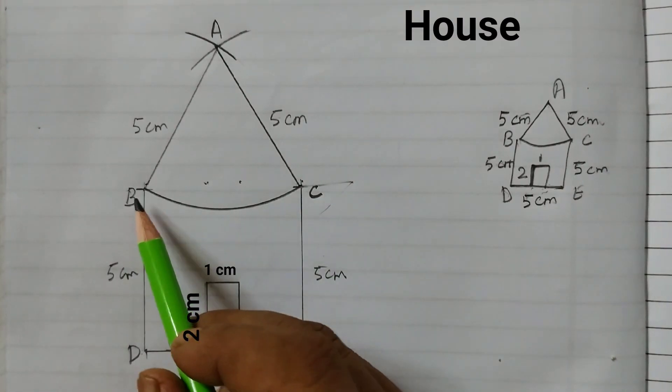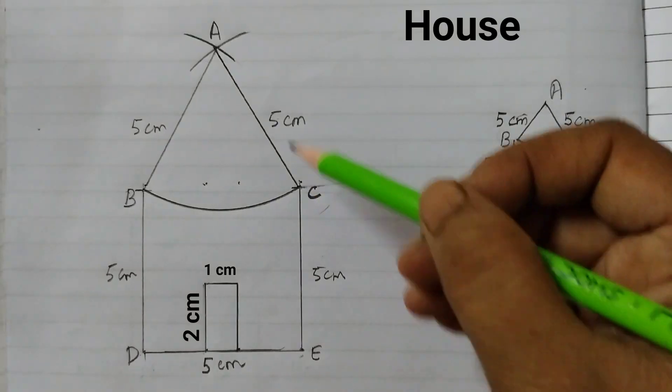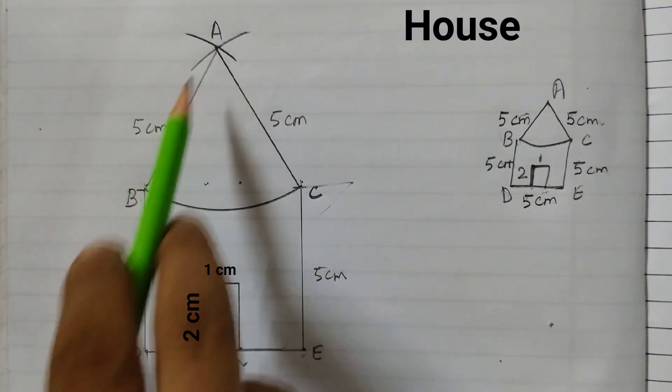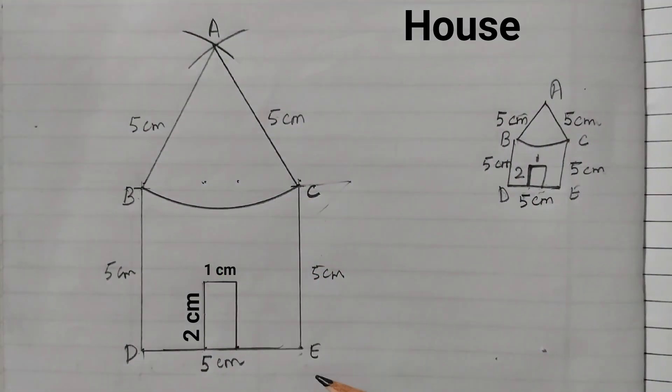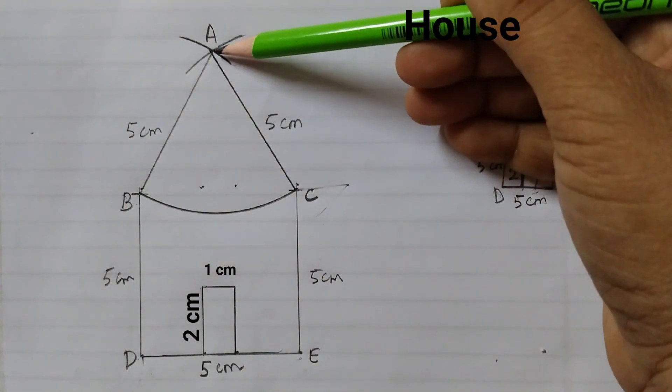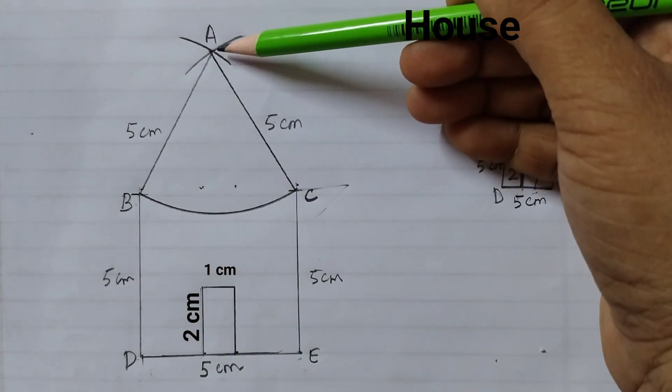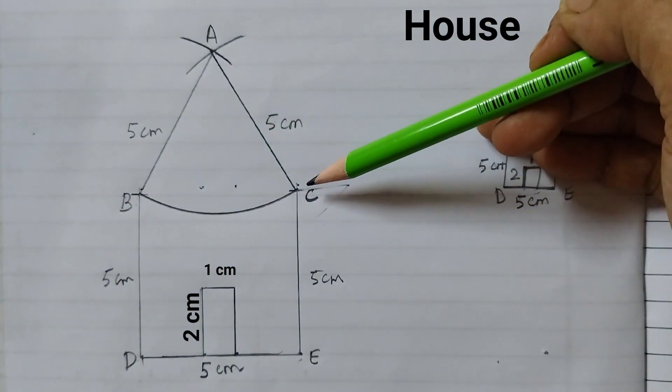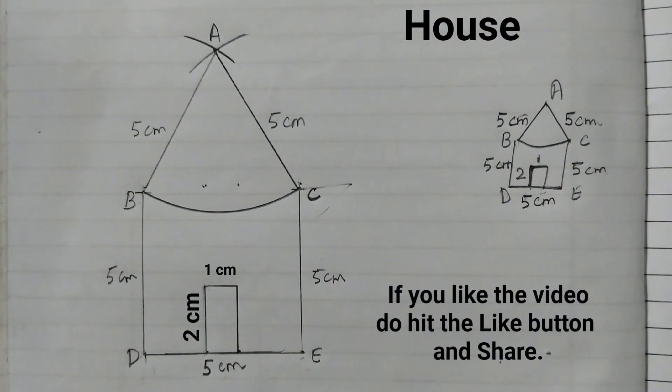With the same measurement, keep the metal point here, cut an arc here. From B, one more arc here. Join A to B, A to C. Then you keep the metal point here with the same radius, that is 5 cm radius in the compass. You will keep the metal point here and you will draw the arc like this. And your house would be ready. I hope you find this video helpful. Thank you.